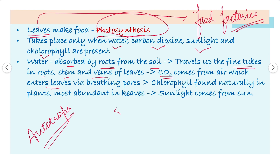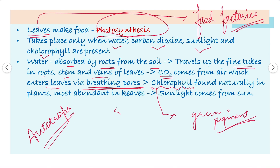Carbon dioxide enters the leaf through the breathing pores. Inside the leaves there is the green pigment, that is chlorophyll. Chlorophyll is the green pigment which is found naturally in the plant, and it is most abundant in the leaves.